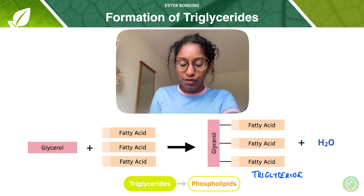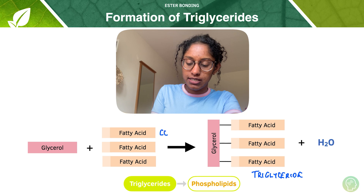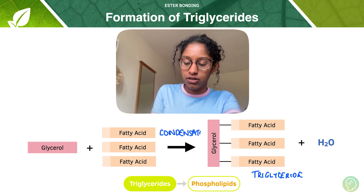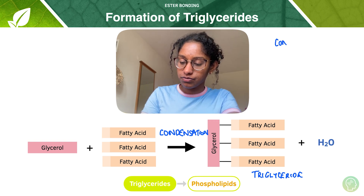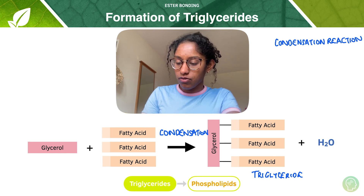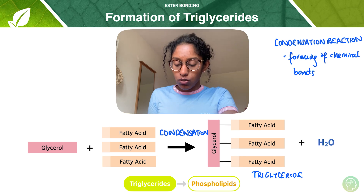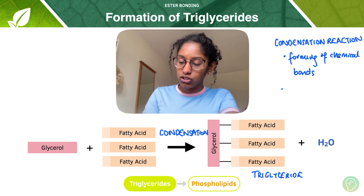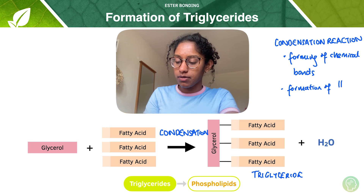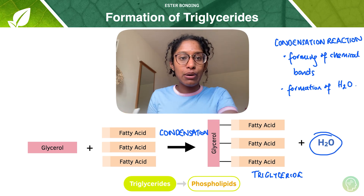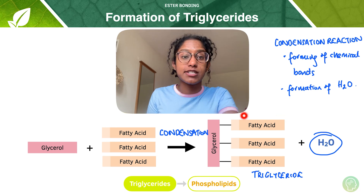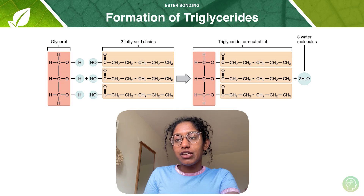What's going on here? We know that the reaction that forms triglycerides is a condensation reaction. In a condensation reaction, we get the forming of chemical bonds between monomers to form a larger structure, such as the polymer triglyceride. And we always get the formation of water as a result of this — always remember that in a condensation reaction, water forms along with the other product, which in this case is triglyceride.